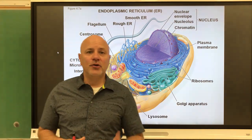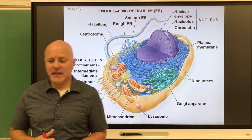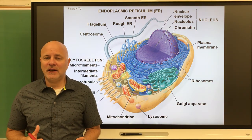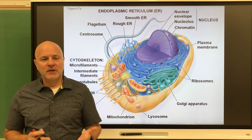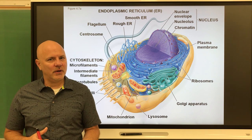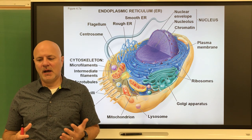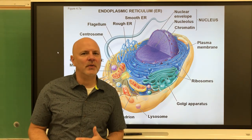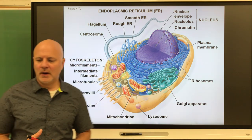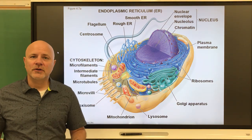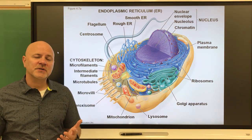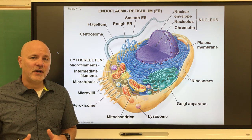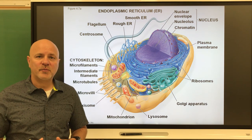Let's take a look at eukaryotic cells. Eukaryotic cells are cells that contain a nucleus. They can be singular or multicellular organisms, and they range anywhere from 10 micrometers to one millimeter. This includes all the Eukarya in terms of life — plants, animals, fungi, and those protists, the single-cell eukaryotic organisms.